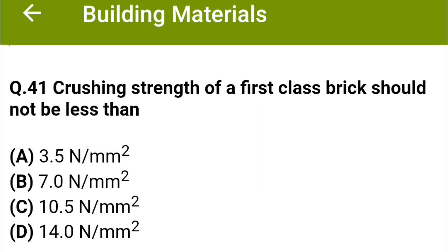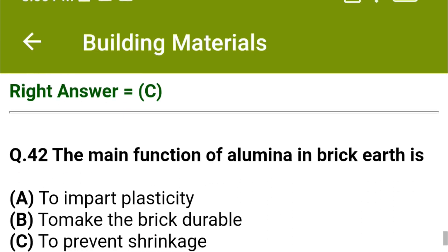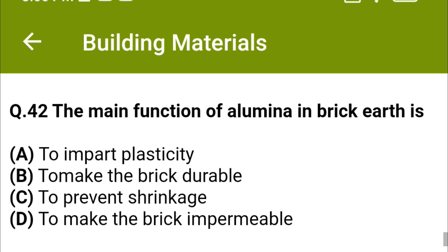The main function of alumina in brick earth is: option A to impart plasticity, option B to make the brick durable, option C to prevent shrinkage, option D to make the brick impermeable. The correct answer is option A: to impart plasticity.